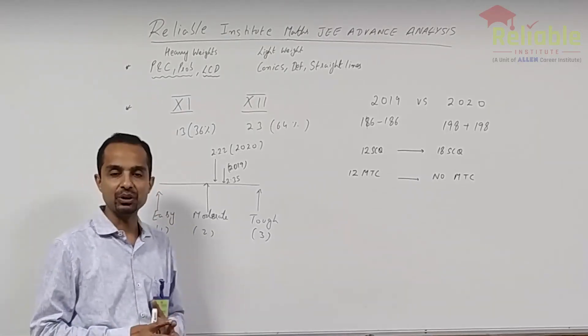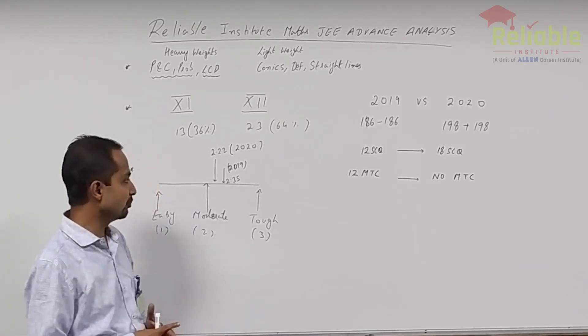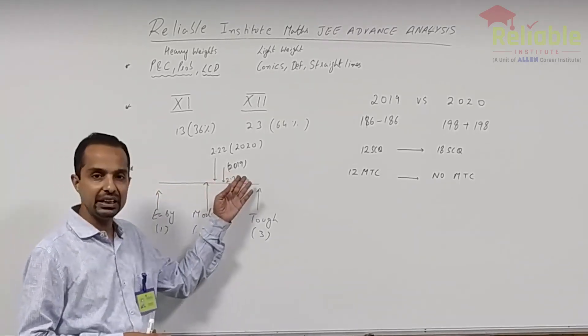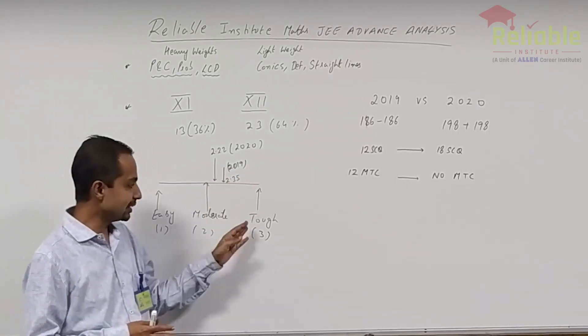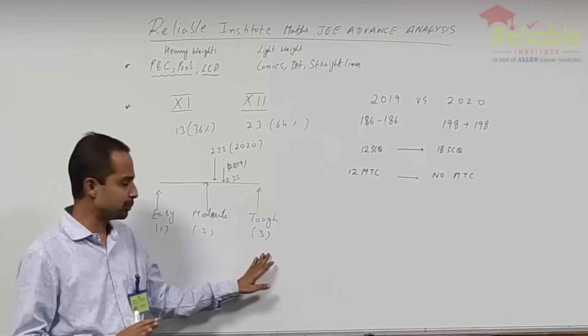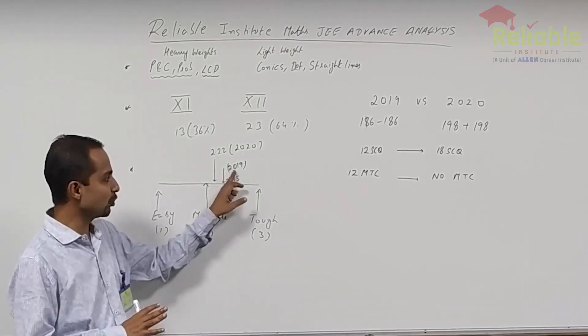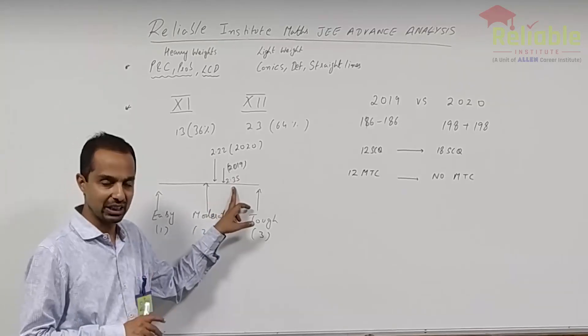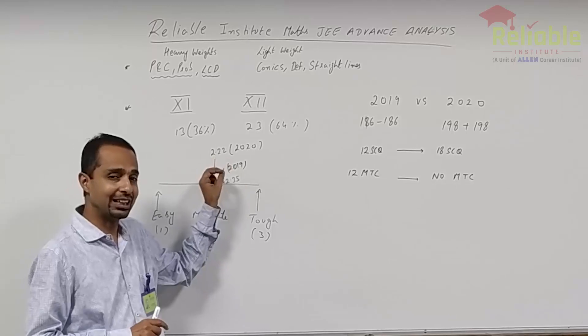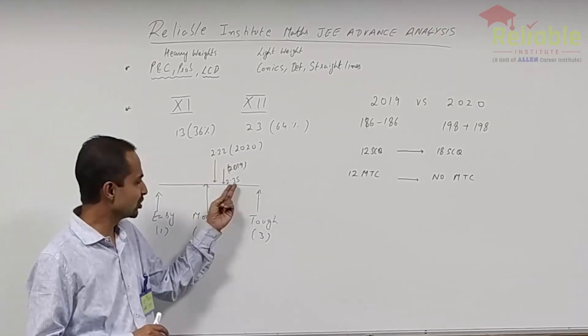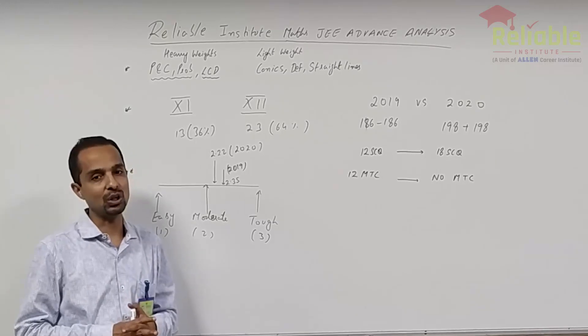First of all, I would like to rate the paper as tough, easy, or moderate. Like previous year, we rated in 2019 the toughness index of 2.35 in mathematics. That is 3 points are assigned to the toughest paper and 1 point is assigned to the easiest paper. So it was 2.35 in 2019. This year we have assessed the paper to be at a scale of 2.22. So it is more or less same as far as toughness goes as compared to 2019.